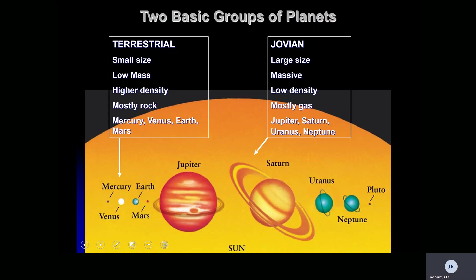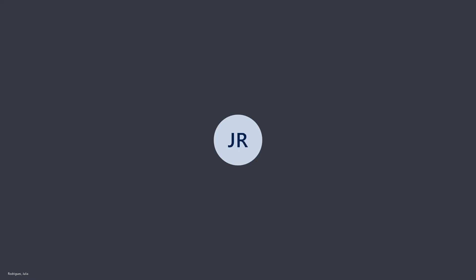There are two basic groups of planets. Terrestrial planets tend to be small in size, low in mass, but high in density because they're made of mostly rock — these include Mercury, Venus, Earth, and Mars. Jovian planets are large in size, very massive, but low in density because they are gas planets mostly made of gas — these are Jupiter, Saturn, Uranus, and Neptune. Make sure you're taking these notes in your class notebook, as notebook checks are coming up soon.